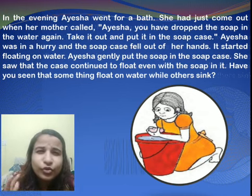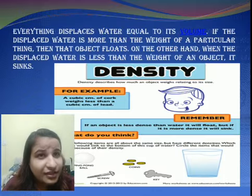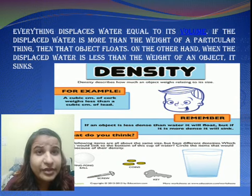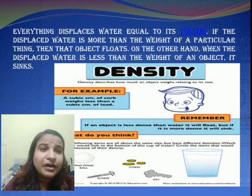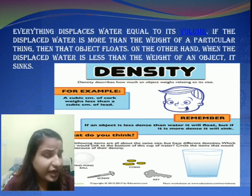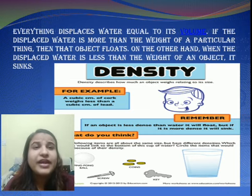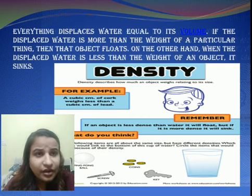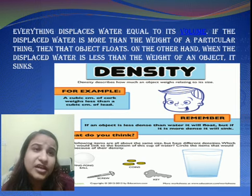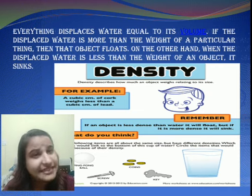Have you seen that some things float on water while others sink? Let me explain. Everything displaces water equal to its volume. If you put something into a glass of water, it is going to displace some water — it takes up the place of that water. If the displaced water is more than the weight of the object, the object floats. On the other hand, when the displaced water is less than the weight of the object, it sinks.